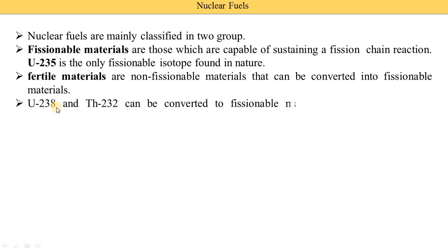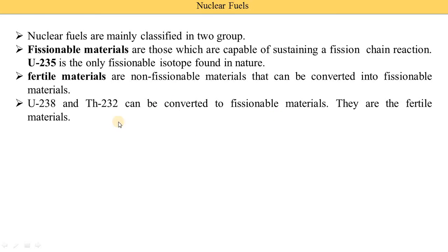Uranium-238 and Thorium-232 can be converted to fissionable materials, and they are the fertile materials. Once converted into fissionable materials, they are able to sustain chain reactions.